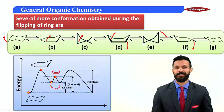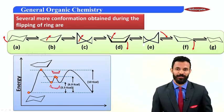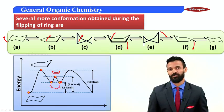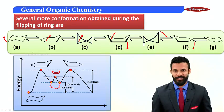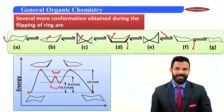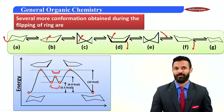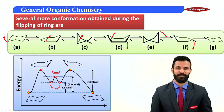Due to the presence of both steric strain and torsional strain, the boat conformation is 6.9 kilocalories higher in energy than the chair conformation. This boat then gets converted again to a twist boat, which further gets converted to a half chair, and ultimately we get the other extreme chair conformation. This analysis gives us a clear picture of all the conformations encountered during the flipping of a chair conformation.